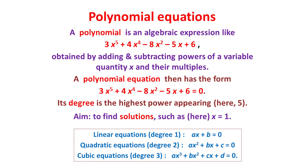A polynomial equation is an equation where a polynomial is put equal to zero. Our aim is to find solutions of the equation. For example, this equation has x equals 1 as a solution, because when we substitute 1 for x and its powers, we get 3 plus 4 minus 8 minus 5 plus 6, which equals 0. It also has four other solutions.